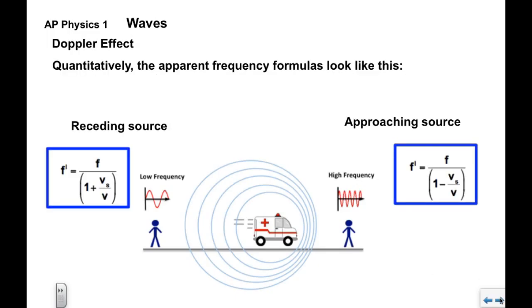In terms of quantification, in the case of an approaching wave source, F prime is the apparent frequency perceived by the observer. F is the actual frequency of the sound. And we have in the denominator 1 minus Vs over V. Vs is the velocity of the source, not the velocity of sound. This V in the denominator is the velocity of the waves, so this would be the speed of sound.